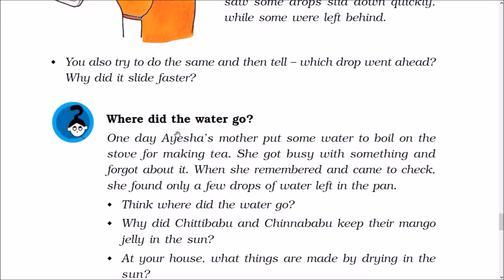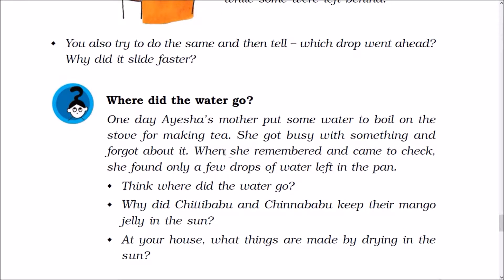Where did the water go? One day Ayesha's mother put some water to boil on the stove for making tea. She got busy with something and forgot about it. When she remembered and came to check, she found only a few drops of water left in the pan. Where did the water go? The water evaporated and turned into vapor. This is the process of evaporation.